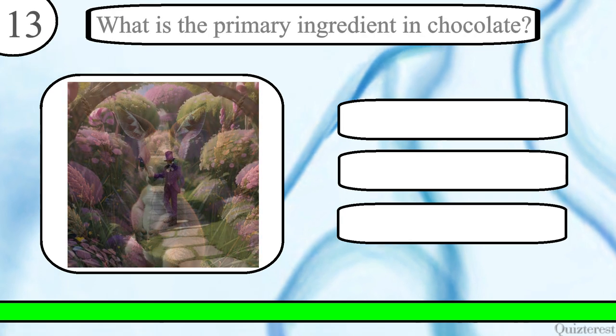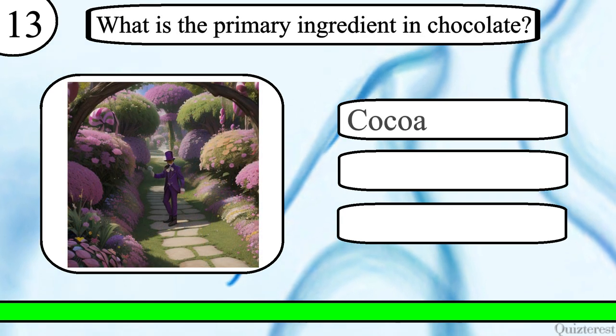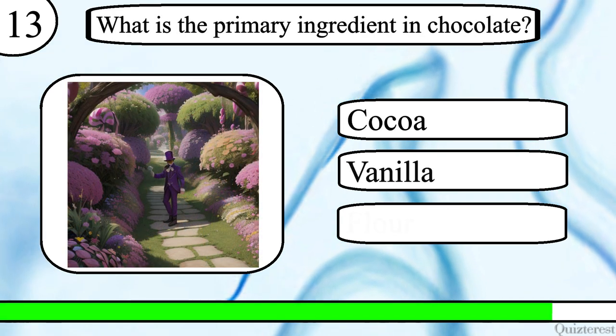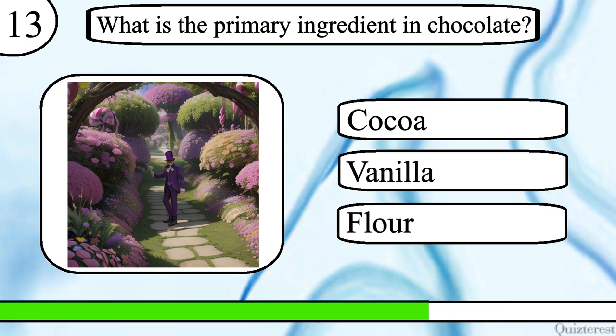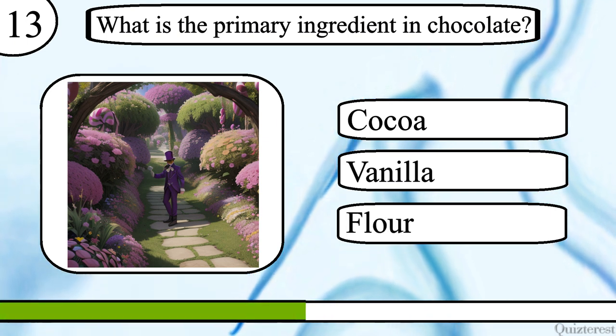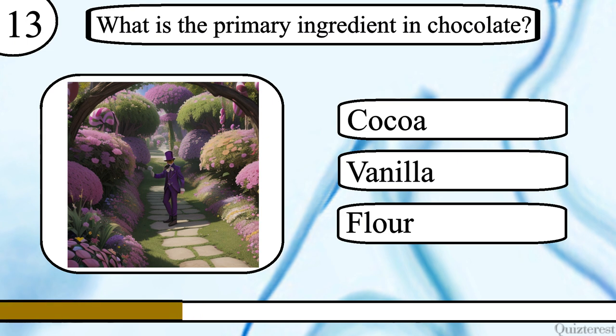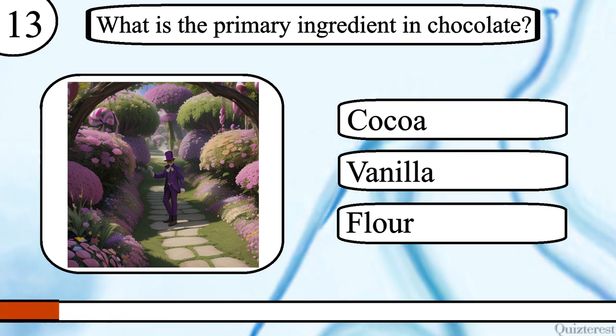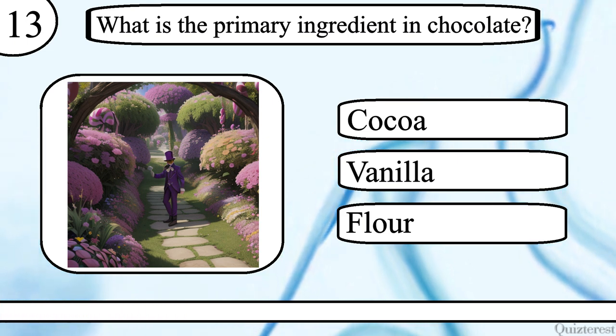Question 13. What is the primary ingredient in chocolate? Cocoa, vanilla or flour? The correct answer is cocoa.